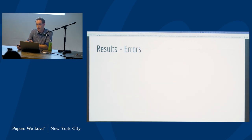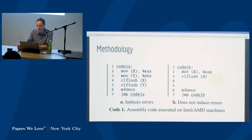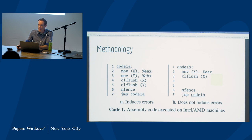A couple more quick comments on the methodology. They tested a ton of different chips from different manufacturers, named A, B, and C — they didn't actually say which was which, though they supposedly reached out to all the vendors. They tested chips over roughly six or seven years and tried to figure out which runs of chips and architecture changes occurred over time, mostly by looking at IDs on the boxes.